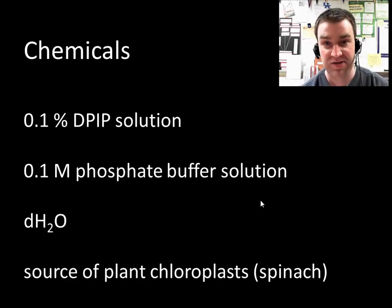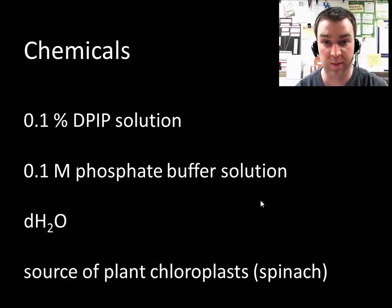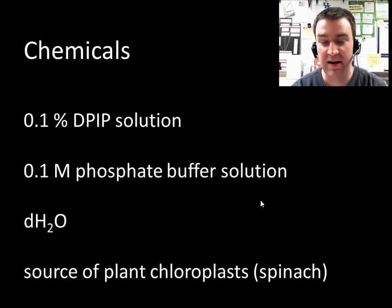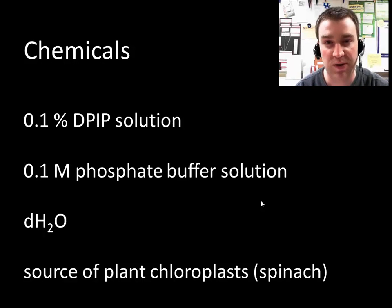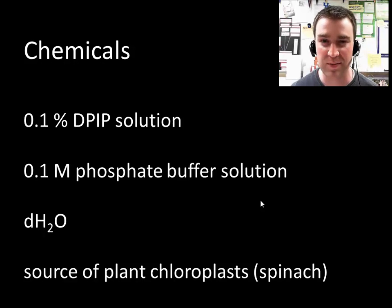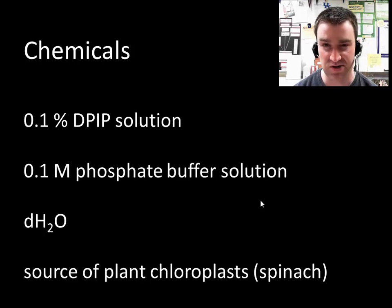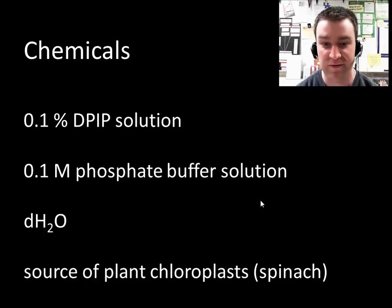We need some chemicals to run this lab. We certainly have our DPIP solution, made at a 0.1% concentration. We're also using phosphate buffer solution. Buffers simply help prevent drastic swings in pH. We're going to take our spinach leaves, blend them to release the chloroplasts, and since they'll be outside their natural cellular context, we add the buffer solution to ensure there won't be crazy pH swings that could cause adverse effects on our photosystem proteins.